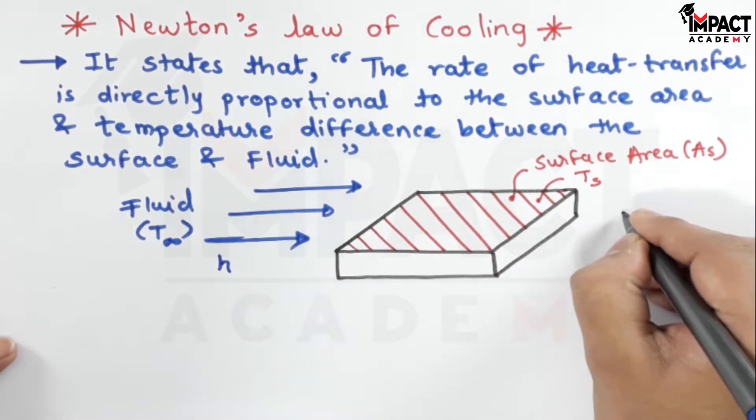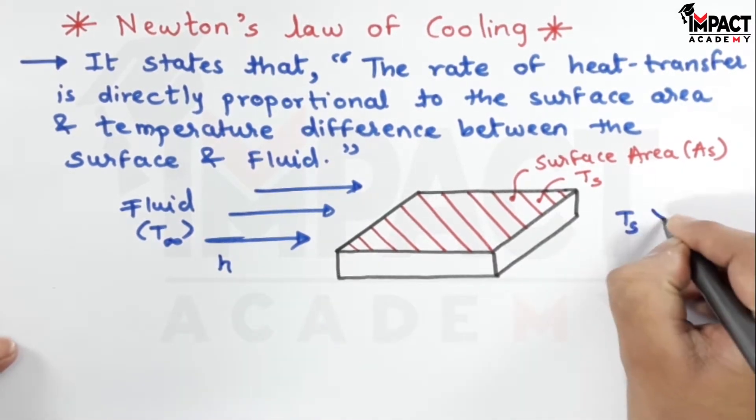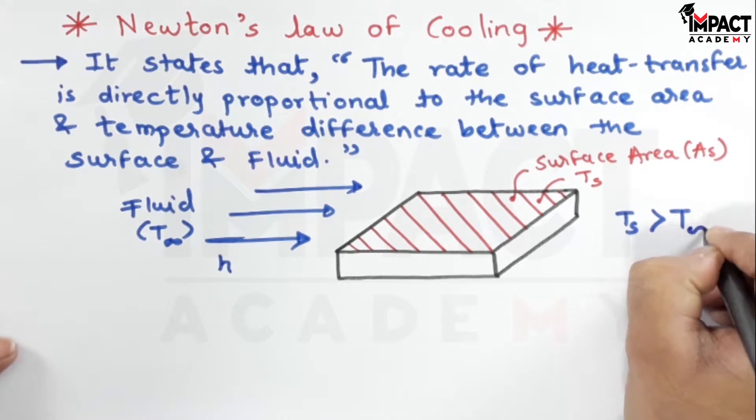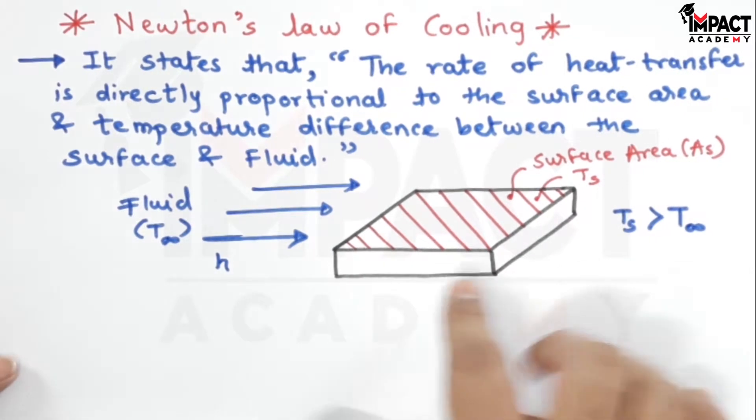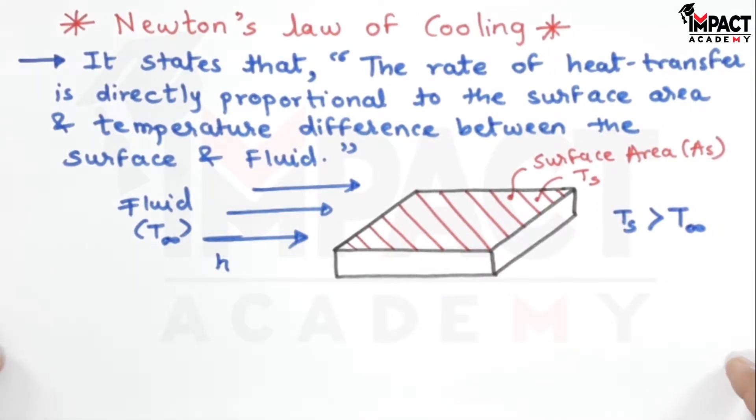Here, the assumption is that the surface temperature of the plate is greater than the temperature of the fluid, T infinity. It can even be reversed that the fluid can have high temperature, the plate can have low temperature.